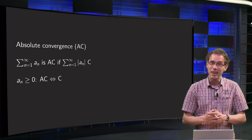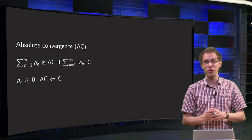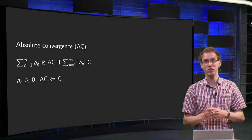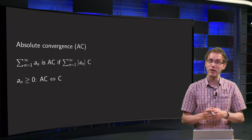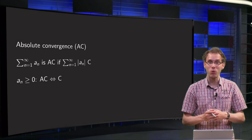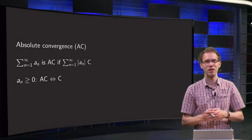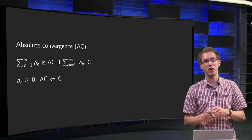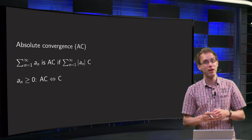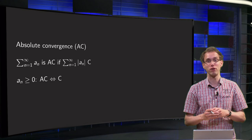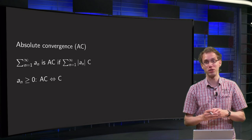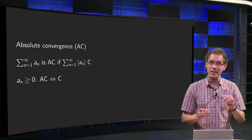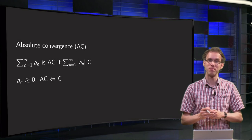In the case of the alternating series we have the following problem. Even when the series converges, the sum may depend on the order in which we add terms. To avoid this undesirable property, we need a slightly stronger version of convergence: absolute convergence. In this video you will learn all about it.